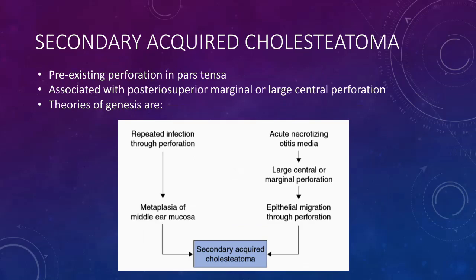Next is secondary acquired cholesteatoma, wherein there is a pre-existing perforation in the pars tensa. It is associated with posterior superior marginal perforation or a large central perforation. The theories of genesis include migration of squamous epithelium, i.e. the keratinizing squamous epithelium of the external auditory canal or outer surface of the tympanic membrane migrates through the perforation into the middle ear. The next theory is metaplasia — due to repeated infections through the perforation, metaplasia of the middle ear mucosa occurs, leading to cholesteatoma.